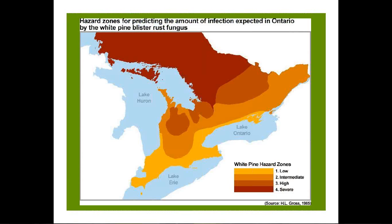In Ontario and other provinces, we have zones where we predict the hazard rating — where this disease is most susceptible across the province. This was done in 1985 by Henry Gross, a longtime Canadian Forestry Service researcher. The light yellow is a low hazard rating, and the darkest orange color at the top to the north is a very high hazard rating. This gives us some indication of where we can plant trees. This map is very crude, and we've been waiting for Quebec to improve on it. They're using state-of-the-art GIS technology to develop a much more risk-based map.